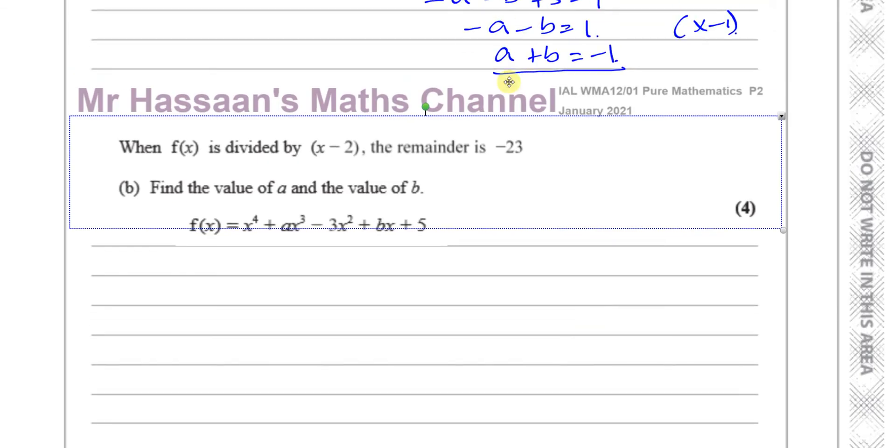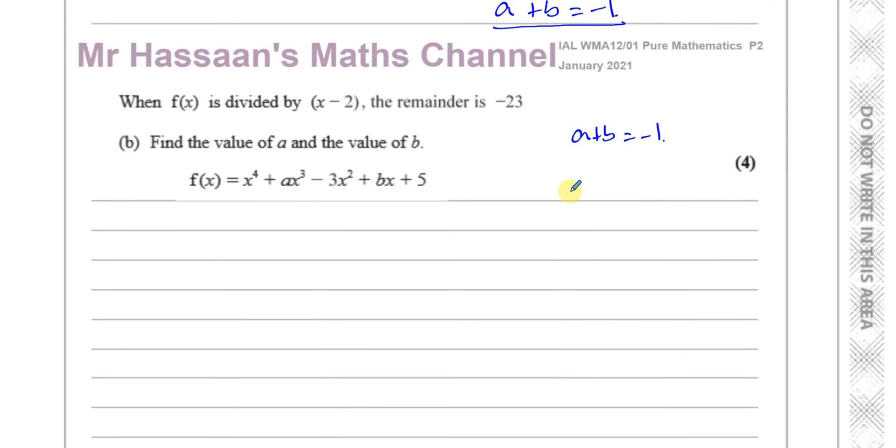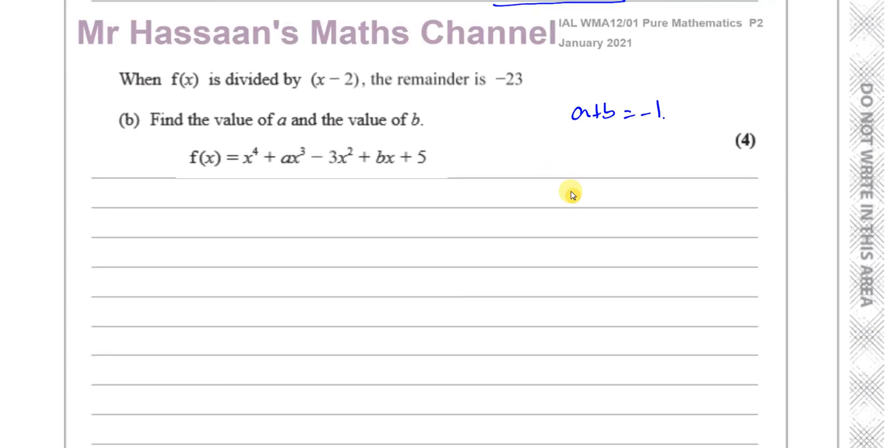So we have two things here: we have the equation from part one which we found, which was a + b = -1, and we have the original function. Similarly, if it's divided by (x - 2) and the remainder is -23, well what makes x - 2 become 0? That's when x = 2.